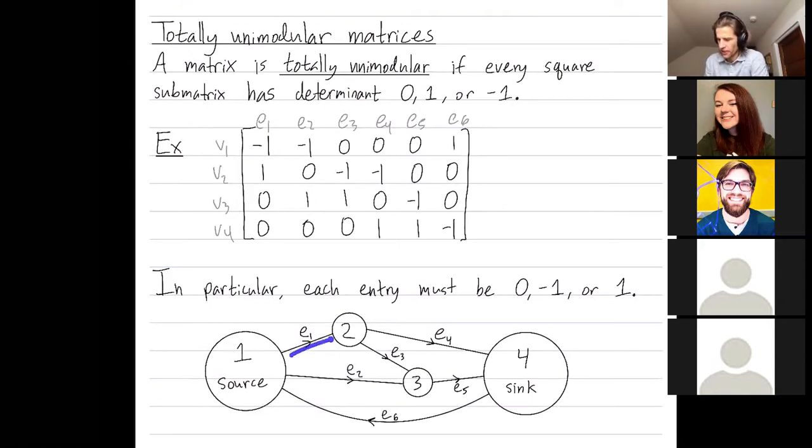And what this matrix actually is, is it's the signed incident matrix for all these edges and vertices. So since the first edge goes from vertex 1 to vertex 2, I have a negative 1 in the V1 entry and a positive 1 in the V2 entry. E5 goes from vertex 3 to 4, so that's why in the E5 column, I have a negative 1 for the vertex 3 row and a positive 1 for the vertex 4 row.